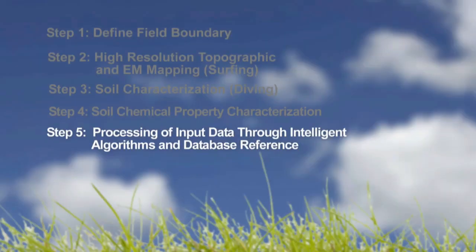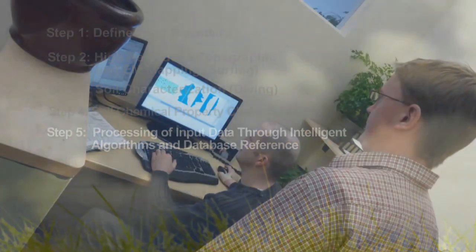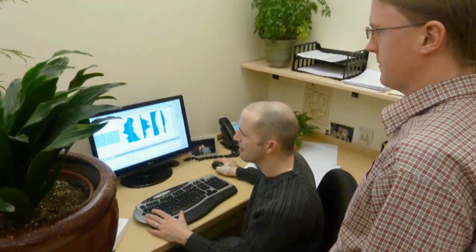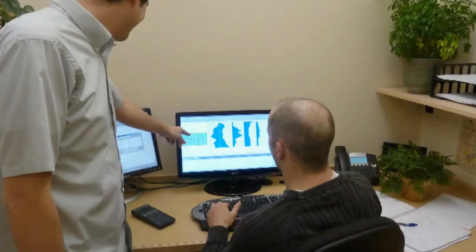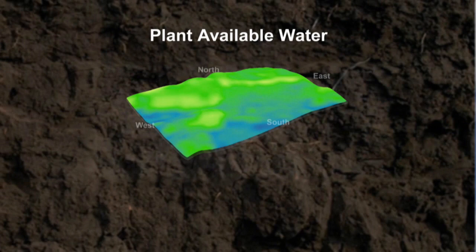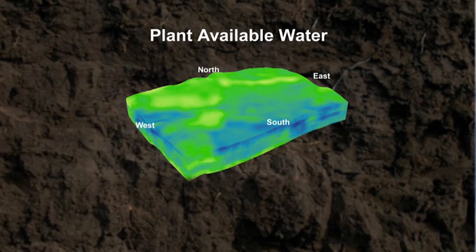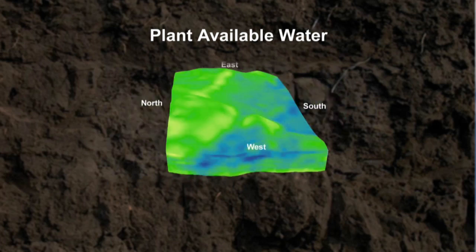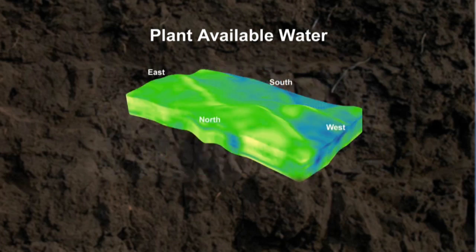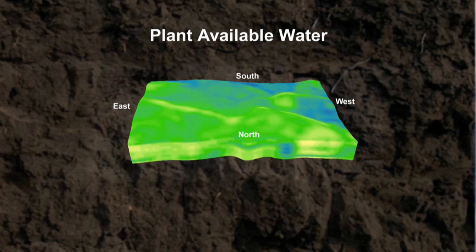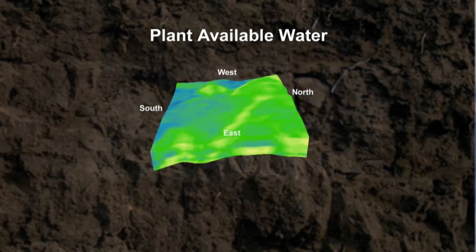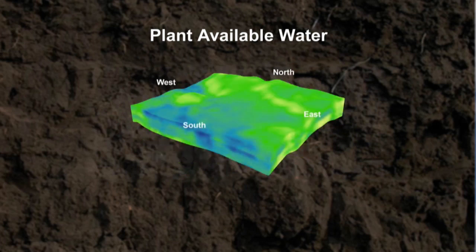Finally, in Step 5, all of this information is processed using algorithms and databases to interpret the data and then create three-dimensional maps. These three-dimensional maps provide the world's most accurate soil information. This field is typical in that its soils have massive variation. Plant available water varies by 100% horizontally and 50% vertically. Plant available water can inform irrigation layout, scheduling, moisture sensor targeting, root stock selection, and many other management decisions.